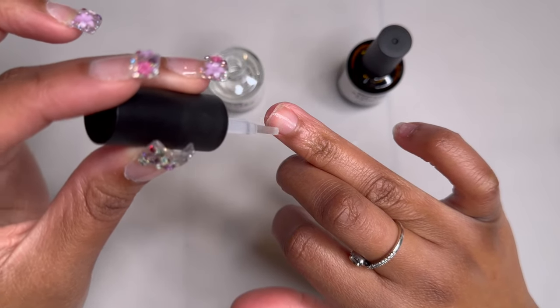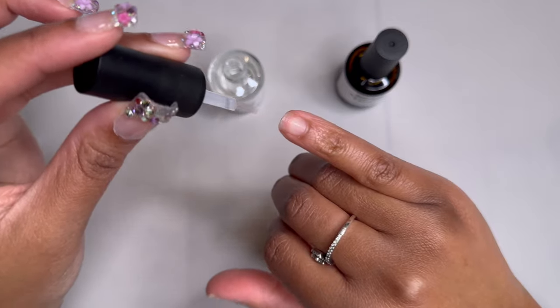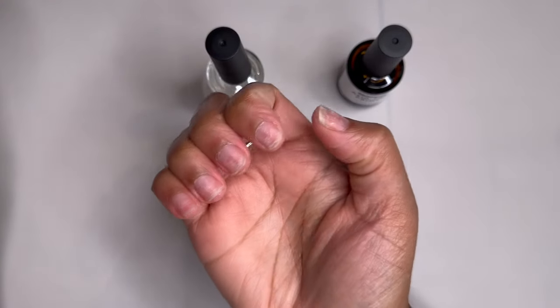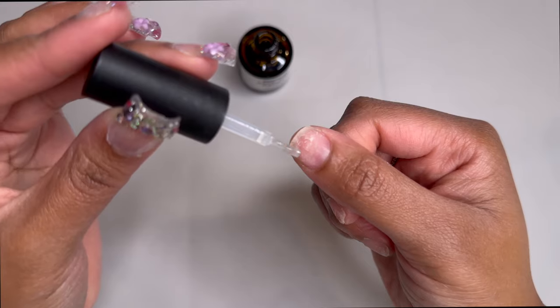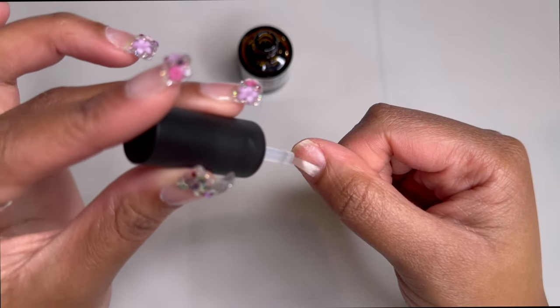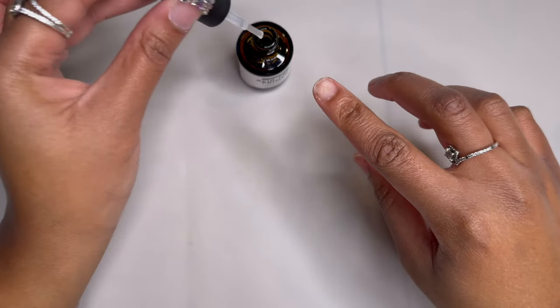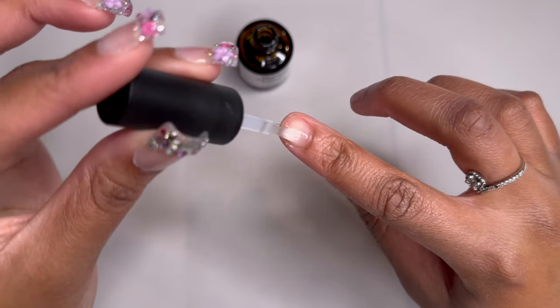After applying the nail dehydrator we give a few seconds to air dry and then we're going to apply the nail primer. The nail primer is going to aid in adhesion by creating a layer that's going to bond with our next step which is adhering the nail tip.